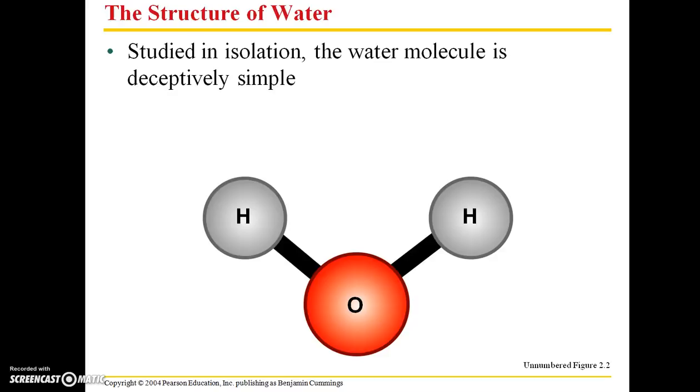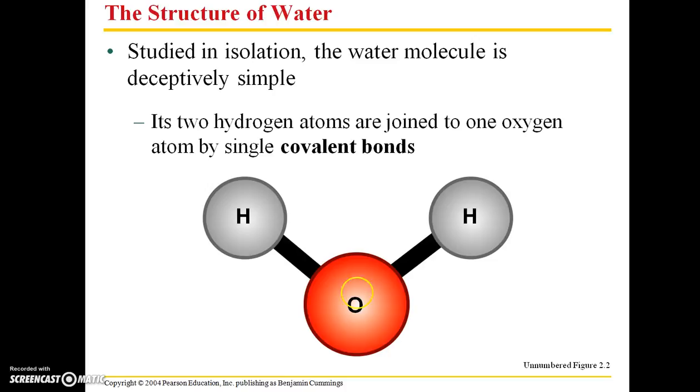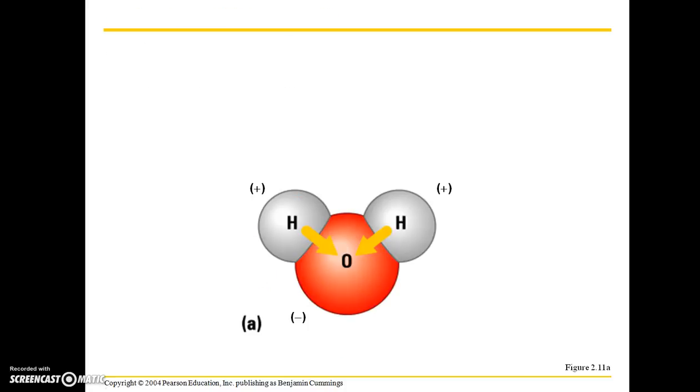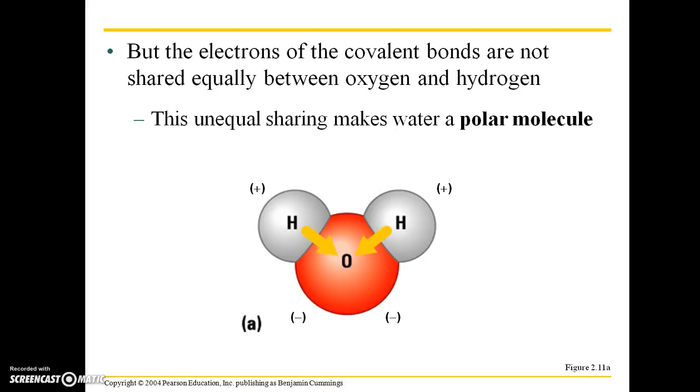So when you look at water in isolation, the water molecule is deceptively simple, especially when we have a ball-and-stick model like this. It's just two hydrogen atoms joined to one oxygen atom by single covalent bonds. Remember, covalent bonds are where atoms are sharing electrons. However, the electrons of the covalent bonds are not shared equally between oxygen and hydrogen. This unequal sharing makes water a polar molecule.